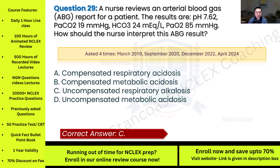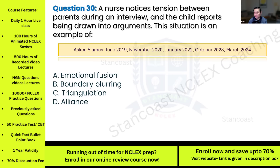Question thirty: A nurse notices tension between parents during an interview, and the child reports being drawn into arguments. This situation is an example of: A) emotional fusion; B) boundary blurring; C) triangulation; D) alliance. This question has been asked five times.